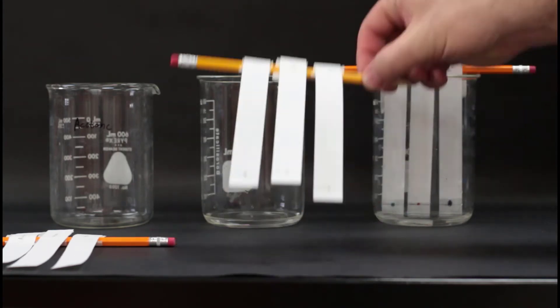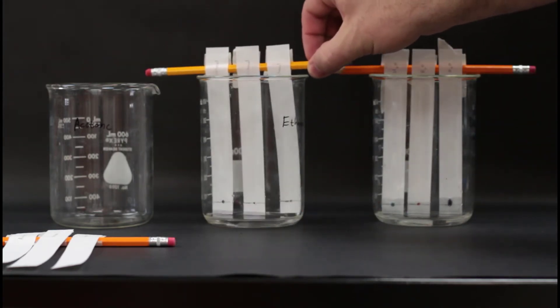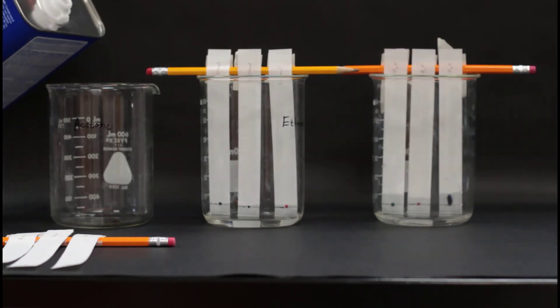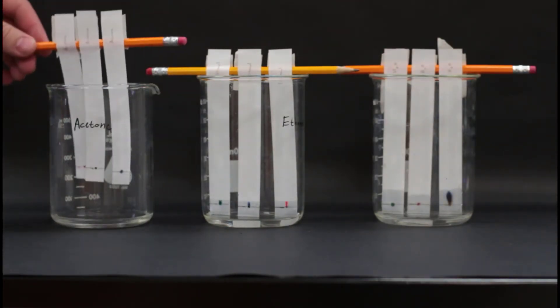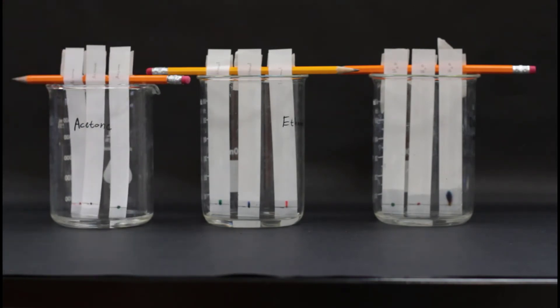Place the chromatography paper into each solvent. The solvent will steadily be absorbed by the paper, traveling upwards. If the ink is able to dissolve in the solvent, it will travel with the solvent. However, if the pigment of the ink is more attractive to the paper than the solvent, it will rise more slowly, and you'll see the different pigments begin to separate.